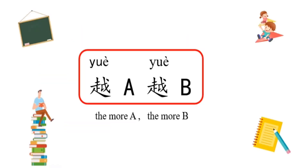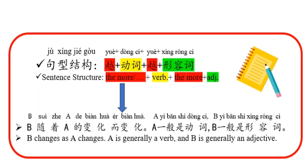越A越B. 越，加动词，加越，加形容词B，随着A的变化而变化。A，一般是动词，B，一般是形容词。The pattern means: as A changes, B changes accordingly. A is typically a verb, and B is typically an adjective.